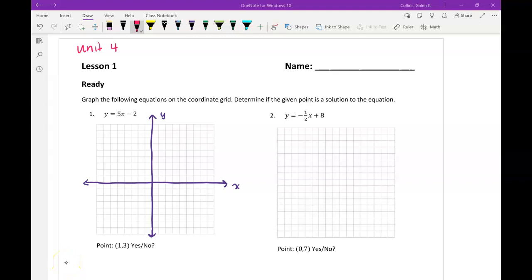In Unit 4 Lesson 1 for the Ready part of the Ready, Set, Go practice, we are graphing equations. So we're going to graph the following equations on the coordinate grid, and then we're going to determine if the given point is a solution to the equation or not.